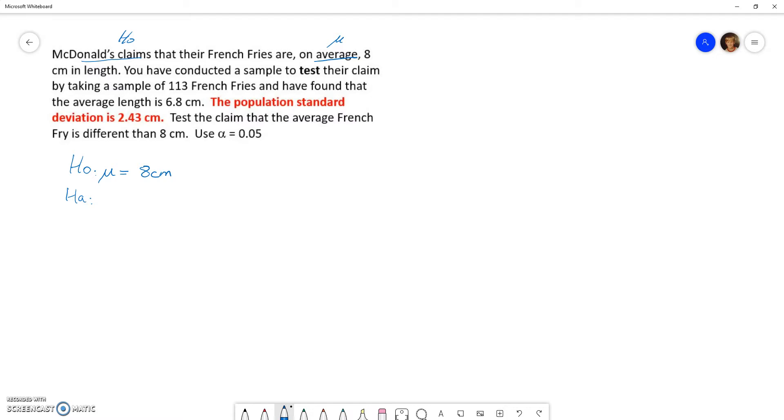The alternate hypotheses, right at the bottom, generally it states, it may only state one, so that's why you have to remember that the two hypotheses are always opposite of each other. But the alternate hypotheses states that the claim, or test the claim, so that's the research hypotheses, that the average is different than eight centimeters. So that's how we would write different. So these two statements are opposite of each other. The null hypotheses is a claim. They're claiming that their average is eight centimeters. We are testing to see if it's different than eight centimeters.